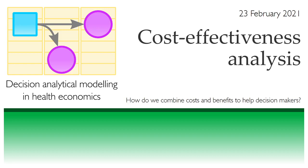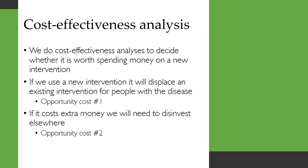In this video we're going to be looking at cost-effectiveness analysis — in particular, how do we combine costs and benefits to help decision-makers. We do cost-effectiveness analyses to decide whether it's worth spending money on a new intervention. If we use a new intervention it will displace an existing intervention for people with that disease, so that's one form of opportunity cost. And if it costs extra money we'll also need to disinvest elsewhere to free up that money, and that's a second sort of opportunity cost.